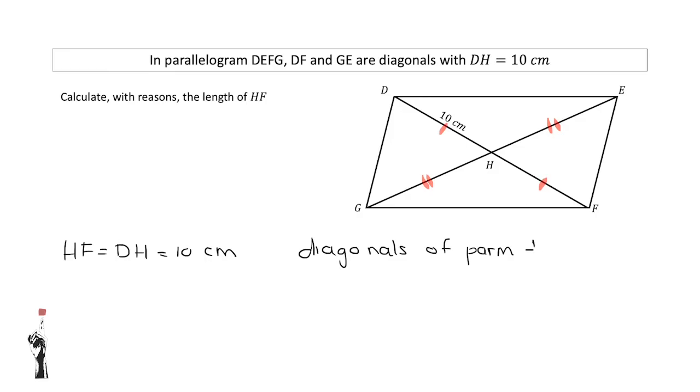You are also allowed to write 'half', as that means bisect each other.